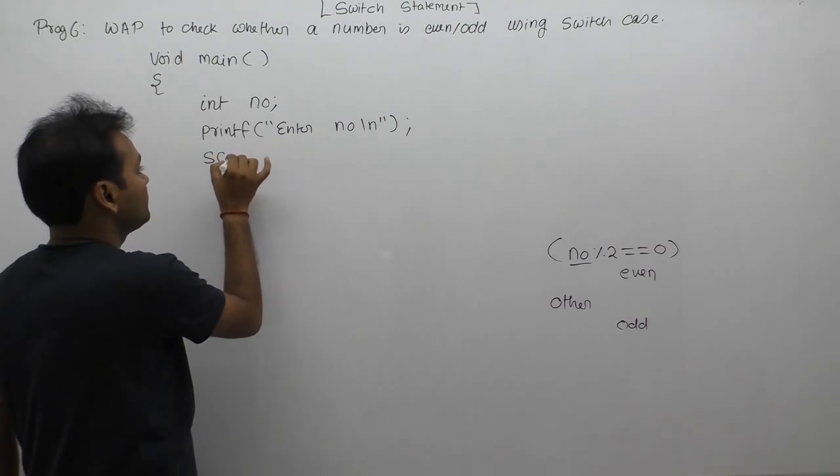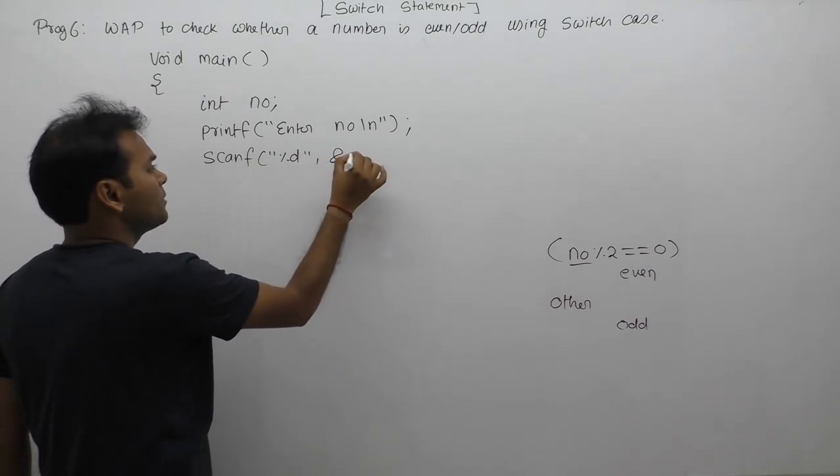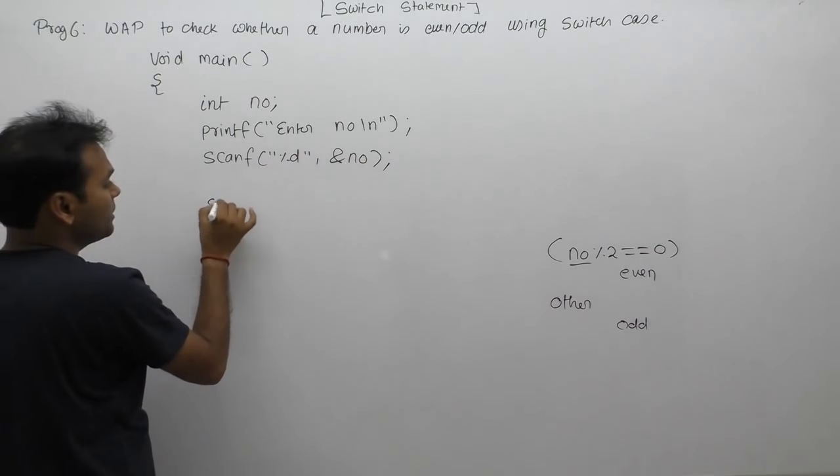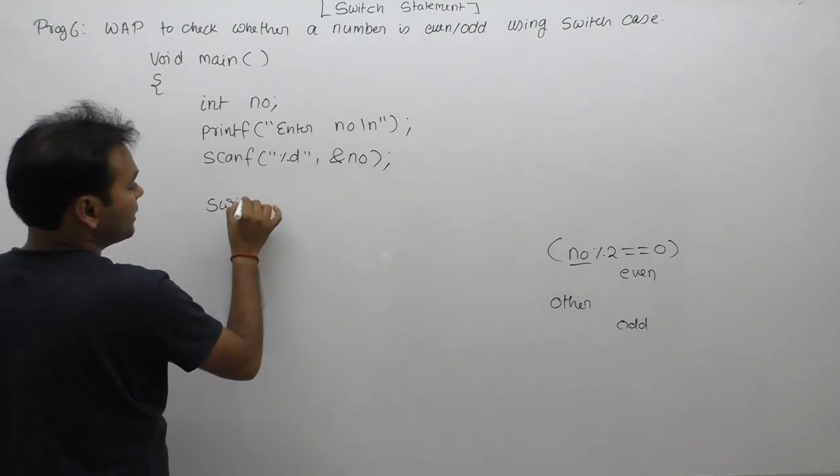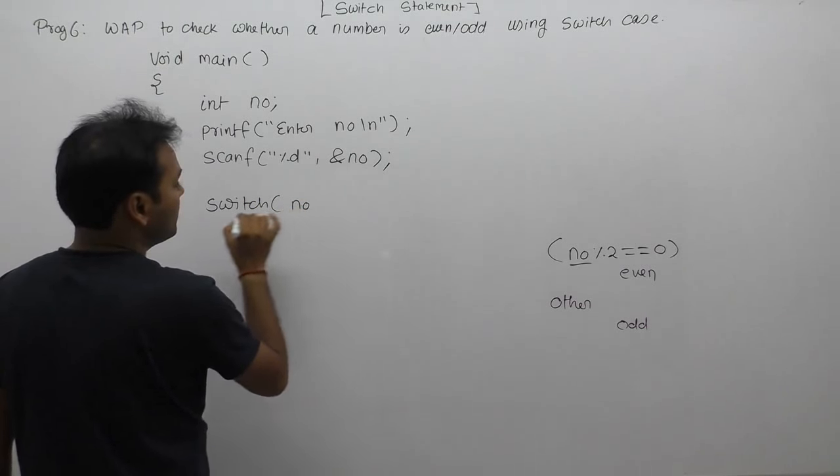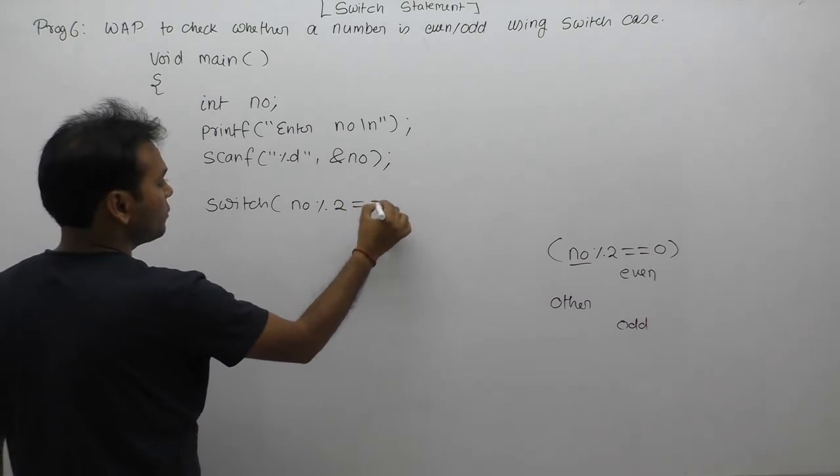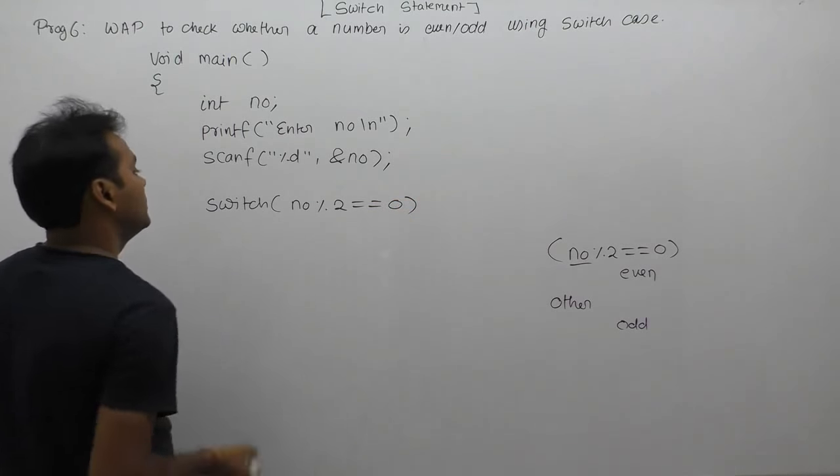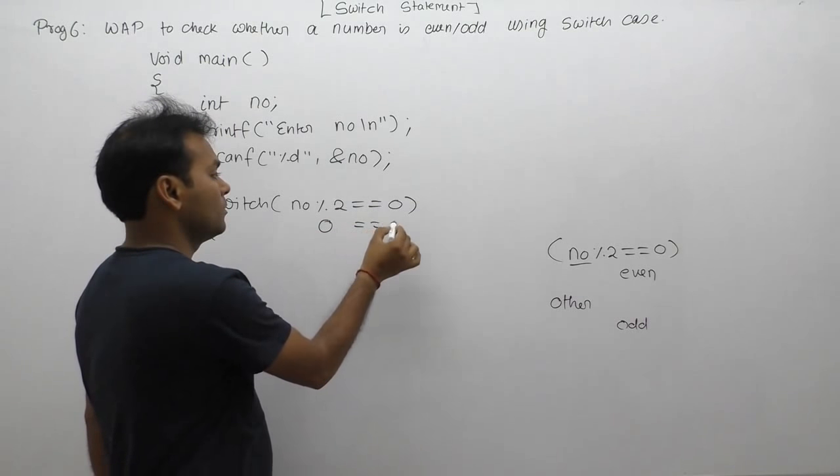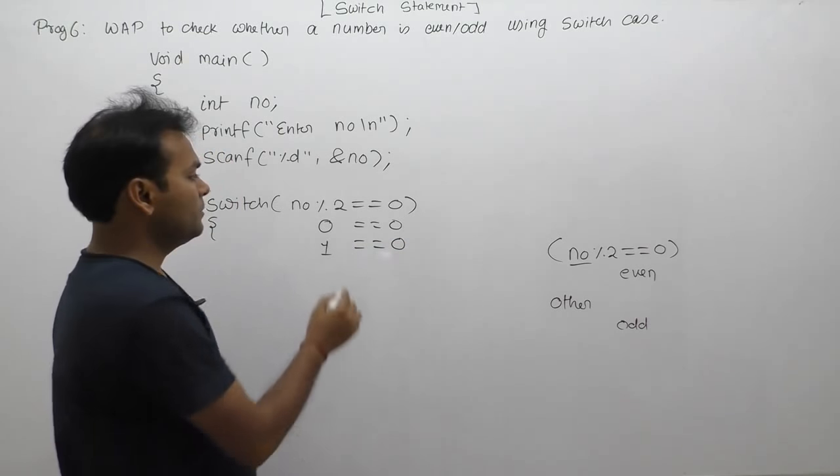scanf function. We display the message 'enter number', then use scanf with %d format specifier for integer input. Then we use switch, supplying the same condition as in the if statement: number modulo 2. When we divide the number by 2, the remainder will be either zero